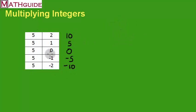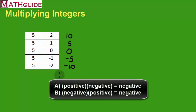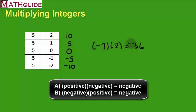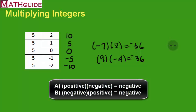The reverse also holds: a negative times a positive is a negative. In other words, when you're multiplying and one of the numbers is negative, your answer is going to be negative. Like negative seven times eight — seven times eight is 56, but because I'm multiplying with a negative number, it's negative 56. And nine times negative four: nine times four is 36, but because I have one negative, the answer is negative. That takes care of how to multiply when one of the numbers is negative — the answer is negative.